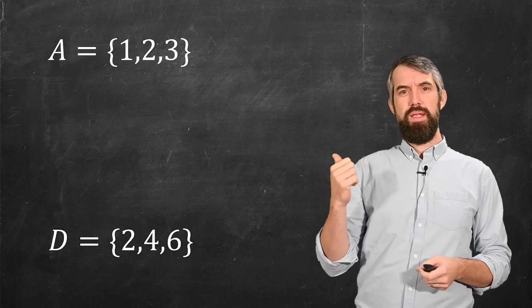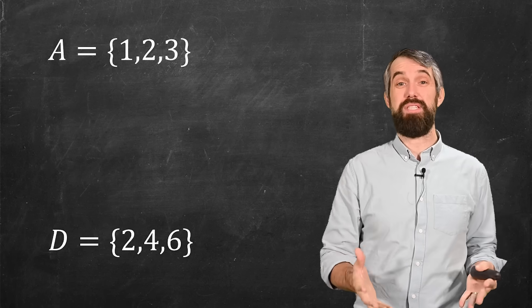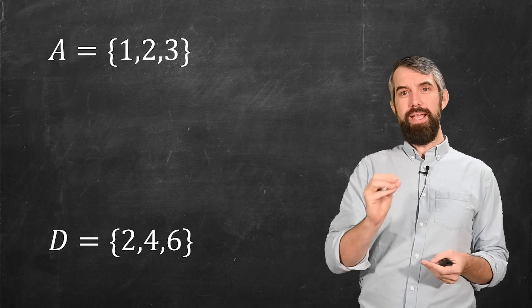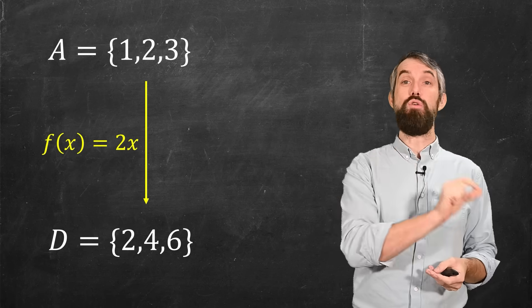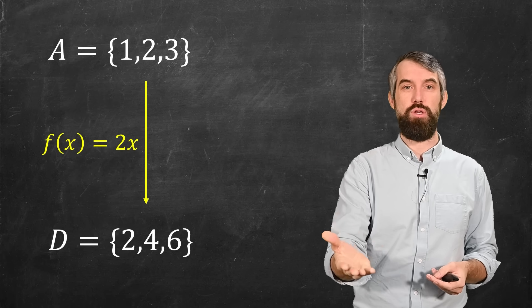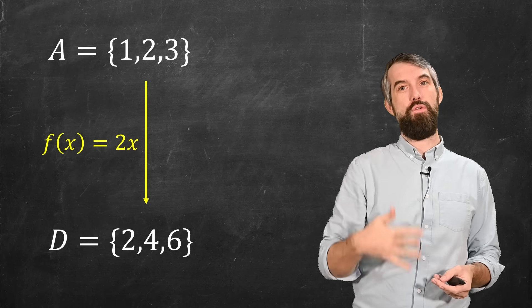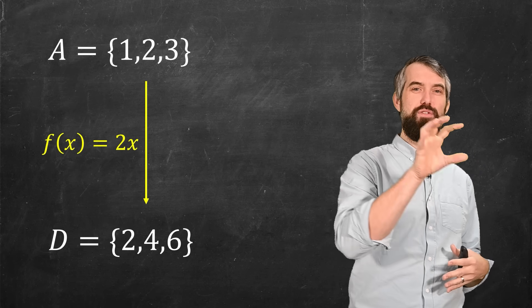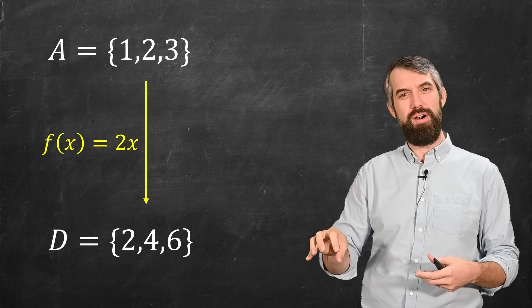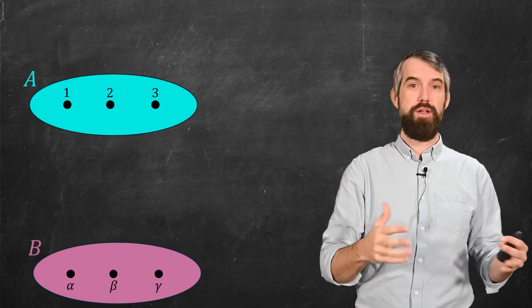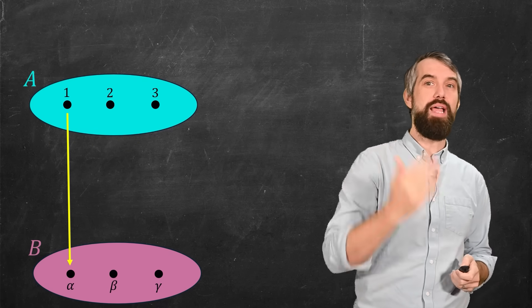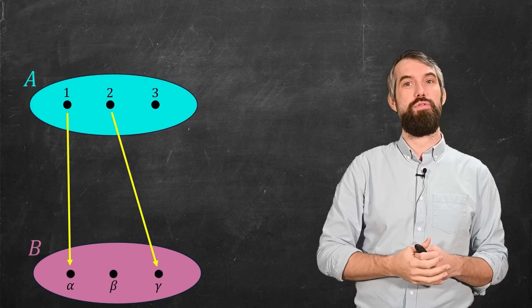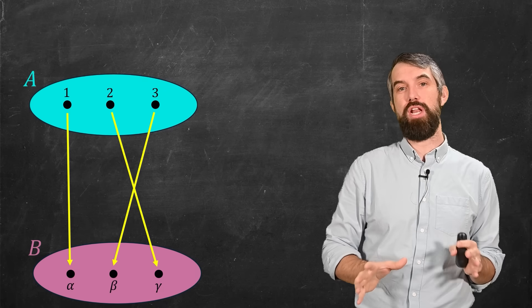1 goes to 2, 2 goes to 4, and 3 goes to 6. This function tells me how I can get from one to the other, but it has some really nice properties. Whereas generally for functions from A to B, I maybe say 1 to alpha, 2 to gamma, and 3 to beta. I can do any function I wish. To be called a bijection, you need your function between your two sets to have two properties.